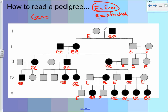Here we have one child with free earlobes — that doesn't tell us much about dad because we know dad is little e, little e. But the daughter is little e, little e. That tells us she got one little e from mom, and the other little e had to come from dad, because you get one allele for each trait from each parent. So in order for her to be little e, little e, she had to get a little e from mom and a little e from dad — which means mom has to be big E, little e.